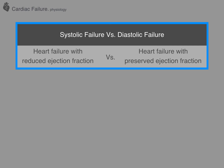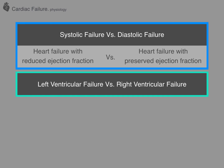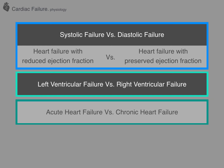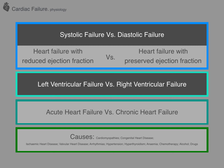Firstly, you'll hear about systolic heart failure and diastolic heart failure, which now have newer terms alongside them: heart failure with preserved ejection fraction, sometimes abbreviated to HFpEF, and heart failure with reduced ejection fraction. We can then also differentiate between left ventricular failure and right ventricular failure. There is also the distinction between acute heart failure and chronic heart failure, and finally there is a very long list of causes.